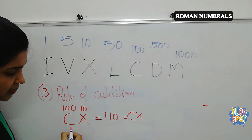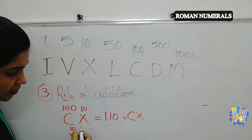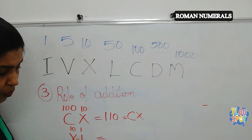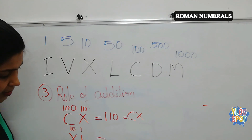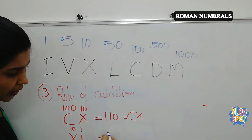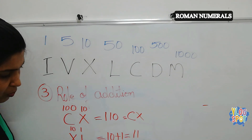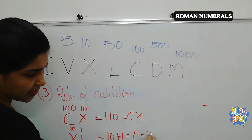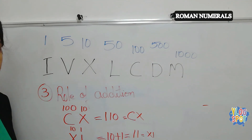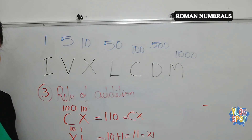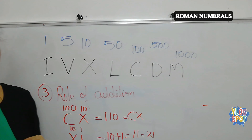One more example of the rule of addition: XI. X represents 10 and I represents 1. The first number is bigger, so 10 plus 1 equals 11. So how to write 11? XI. This is the way we write Roman numerals. If you follow these three rules, it is very easy to write numbers.